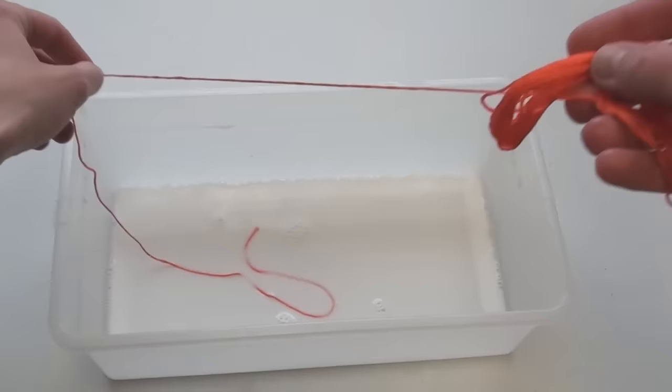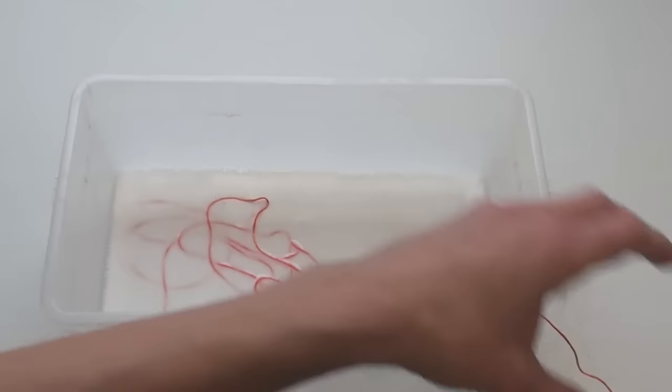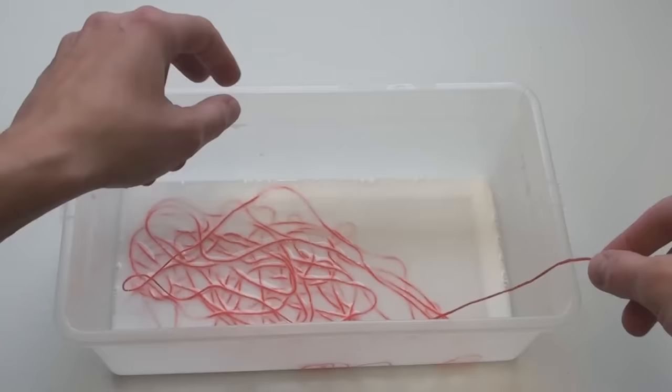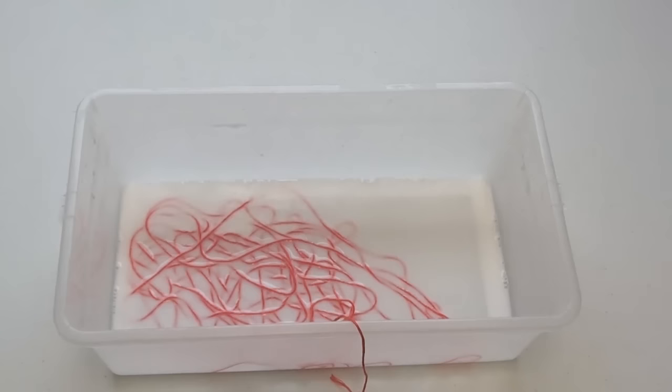Carefully take one skein of embroidery floss and unravel it gently into the water and glue mixture. You'll want to make sure you do not get any knots or tangles. If you are using yarn or string, cut off about 8 to 10 yards of it and place it in the same way as the embroidery floss into the glue mixture. You do not need to soak the string any longer than it takes to grab the balloon.